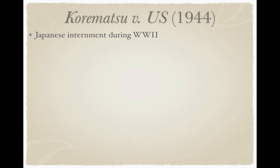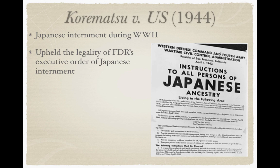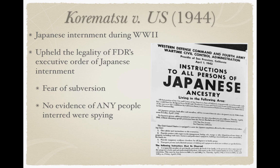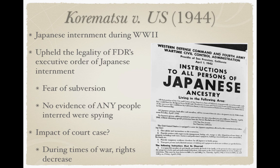Korematsu v. U.S. from 1944 dealt with Japanese internment during World War II. The Court upheld the legality of FDR's executive order of Japanese internment. They were interned due to fear of subversion, though importantly there was no evidence that any of those interned were actually spying on behalf of the Japanese government. The impact, as with Schenck, is that during times of war and crisis, your rights go down.